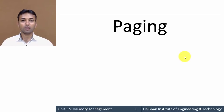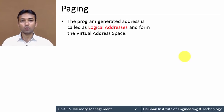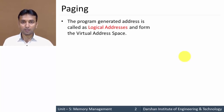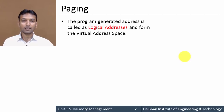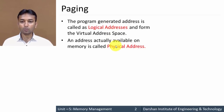In this video we will learn about paging — what is paging, why it is required in our system, and how paging is performed. In our system we have two different types of addresses: a logical address, also called a virtual address, and a physical address. The address generated by a program is a logical address and forms the virtual address space, whereas the address actually available in memory is known as the physical address.